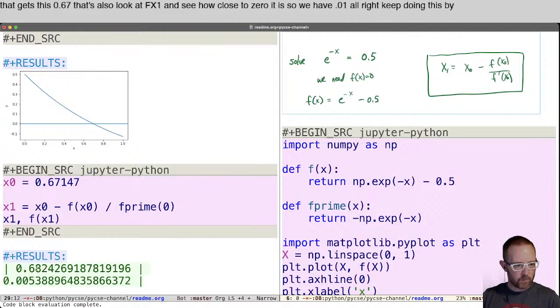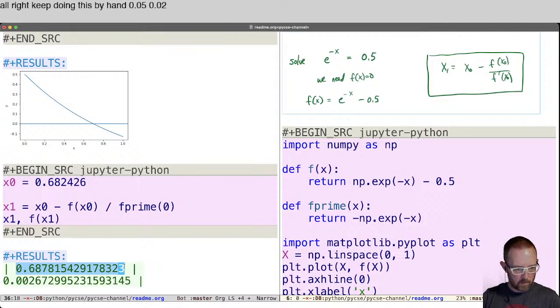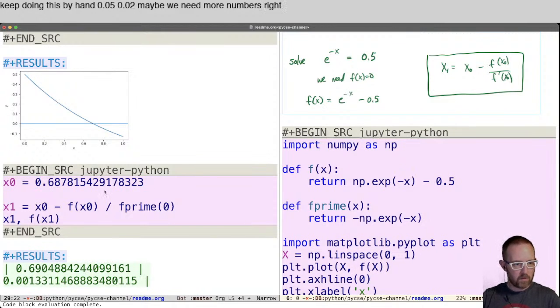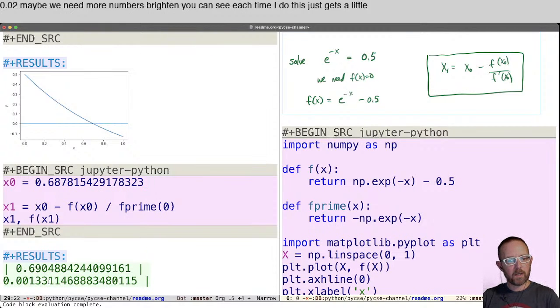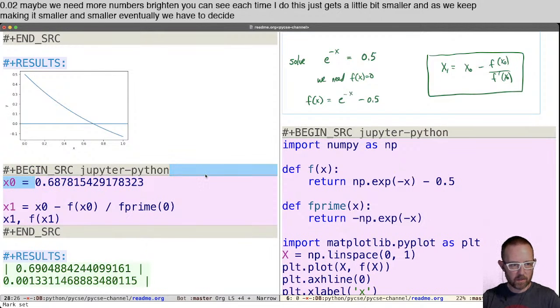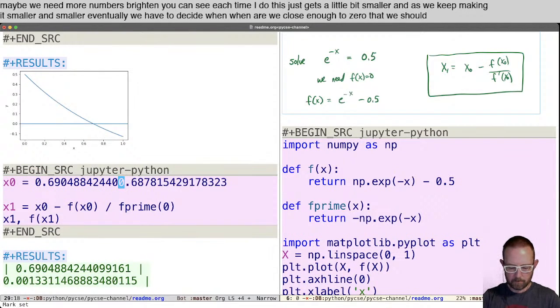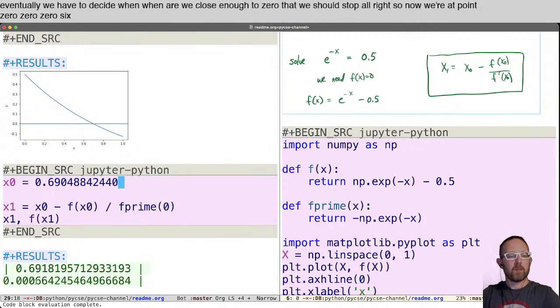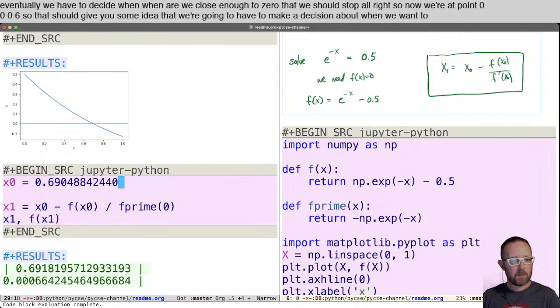Keep doing this by hand. 0.05, 0.02. Maybe we need more numbers. Right. And you can see each time I do this, this gets a little bit smaller. And as we keep making it smaller and smaller, eventually we have to decide when are we close enough to zero that we should stop. All right. So now we're at 0.0006. So that should give you some idea that we're going to have to make a decision about when we want to stop.